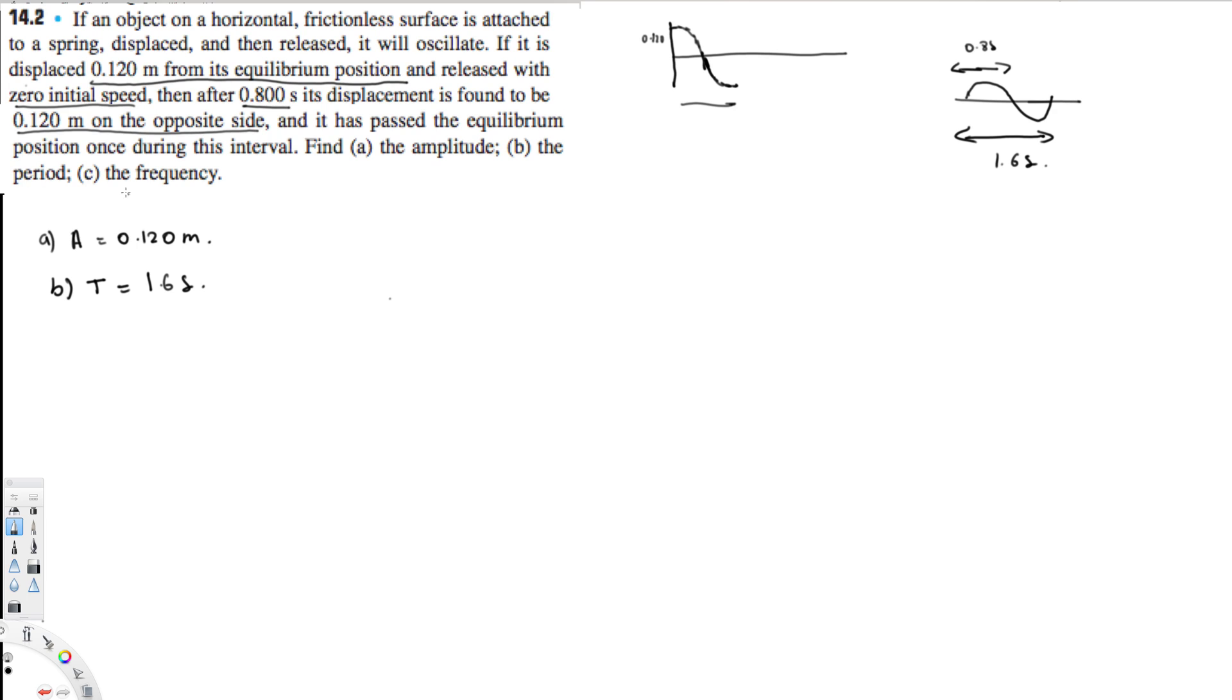The third question asks for the frequency. Frequency is simply the inverse of the period, so this is 1/T. If I divide 1 by 1.6, that gives us 0.625 Hertz, and that's the answer for this question.